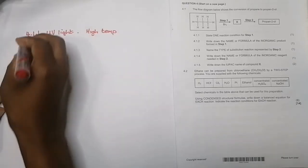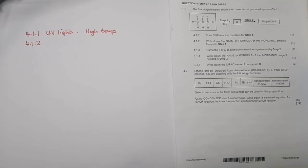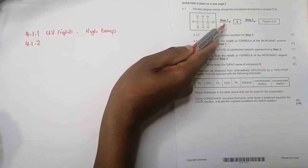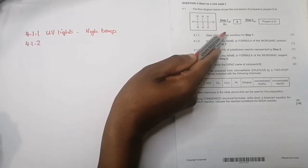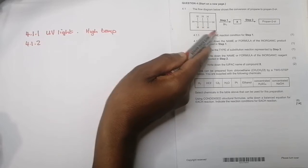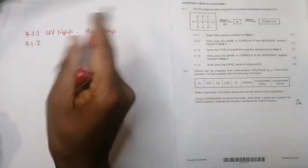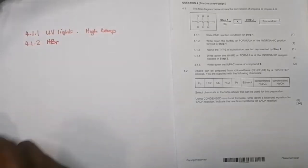For 4.1.2, they say write down the name or formula of the inorganic product formed in step one. Now I want you to note what's going to happen - you're going to have a substitution reaction where one of the bromide ions is going to replace one of the hydrogens. So one of the hydrogens would come off. The hydrogen that came out would now obviously react with the bromide ion that would still be left there, so the inorganic product would be hydrogen bromide.